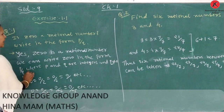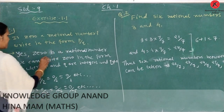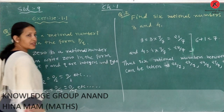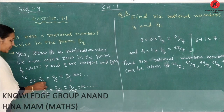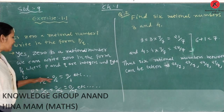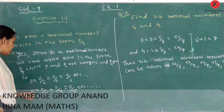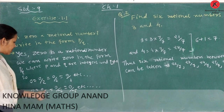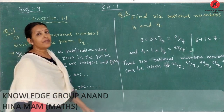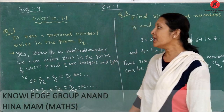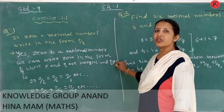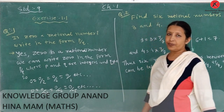We can write 0 in the form P over Q, where P and Q are integers and Q is not equal to 0. For example: 0 equals 0 by 2, equals 0 by 6, equals 0 by 1, equals 0 by 100, etc. Therefore the denominator can be any positive or negative number, but the denominator cannot be 0.